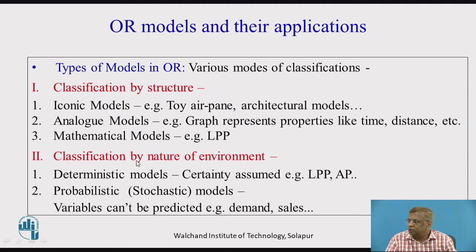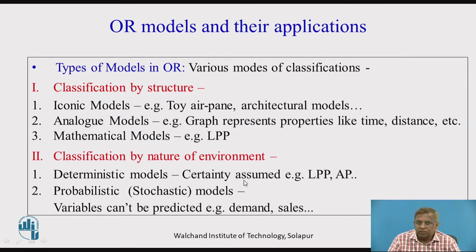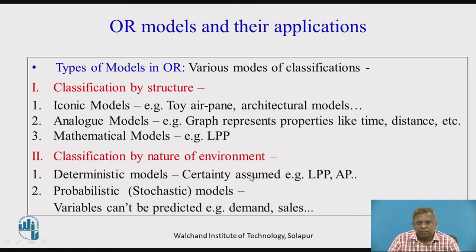The second classification is by the nature of the environment of the data: deterministic models or probabilistic models. Probabilistic models are also referred to as stochastic models. This classification concerns the nature of the data we are using in problem formulation and problem solving — do we have certainty about the data? In models like LPP, assignment problems, and transportation, you may assume certain data values with reasonable confidence; that is called a deterministic model.